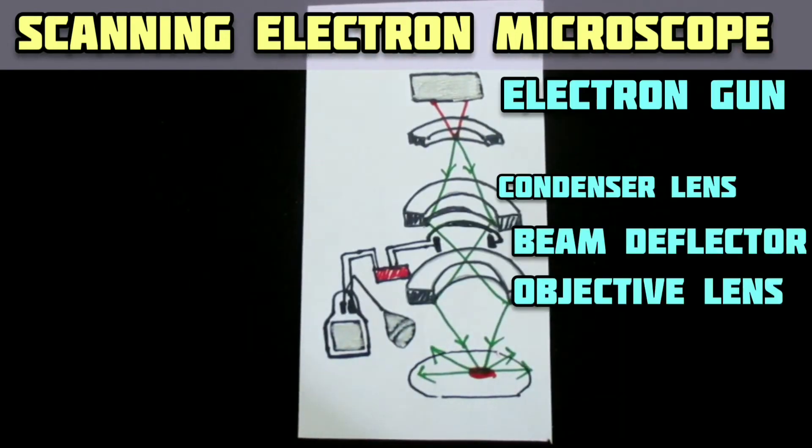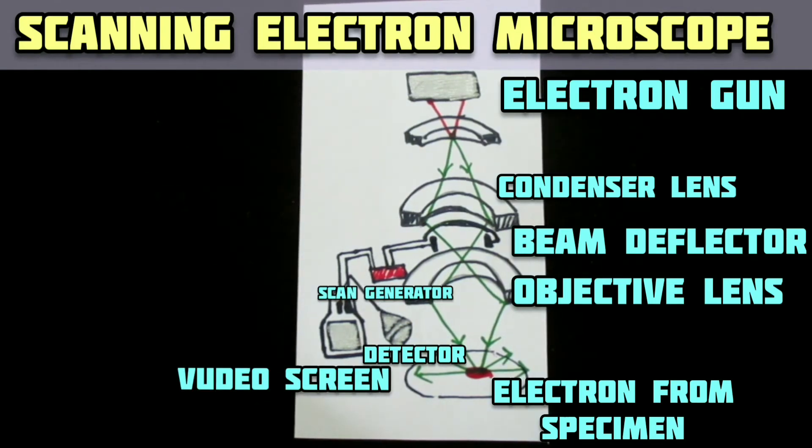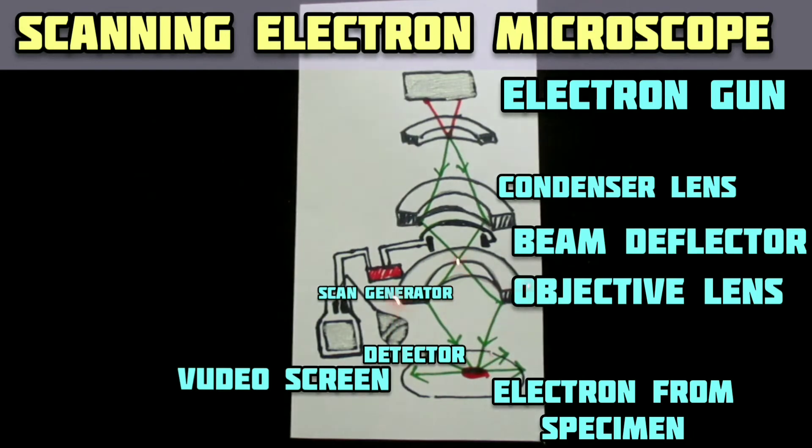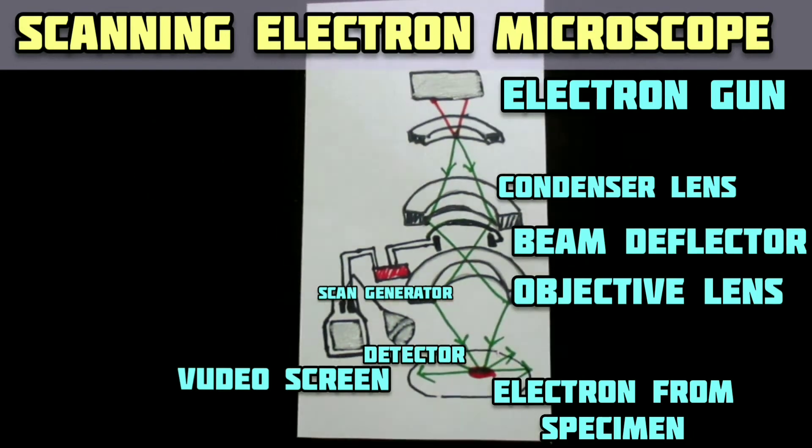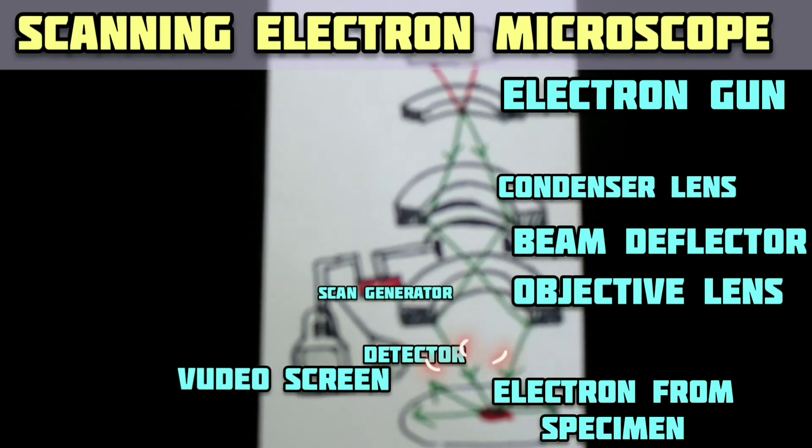The specimen is then scanned with a very narrow beam of electrons. Molecules in the specimen are excited and release secondary electrons that are captured by a detector, generating an image of the specimen surface. Areas which generate large numbers of secondary electrons will appear brighter than areas that generate fewer secondary electrons.